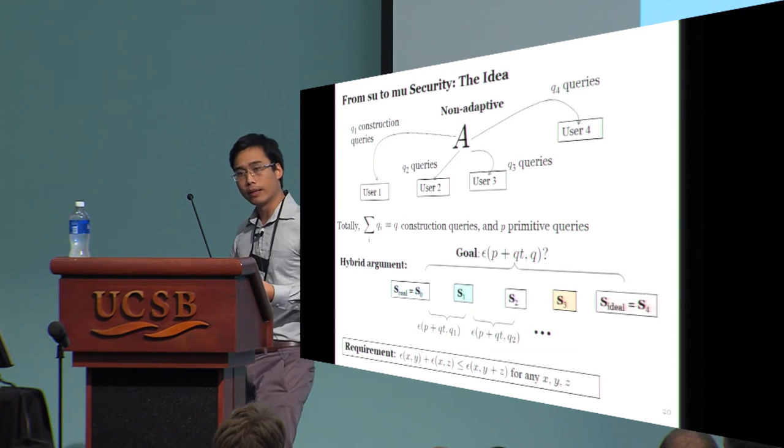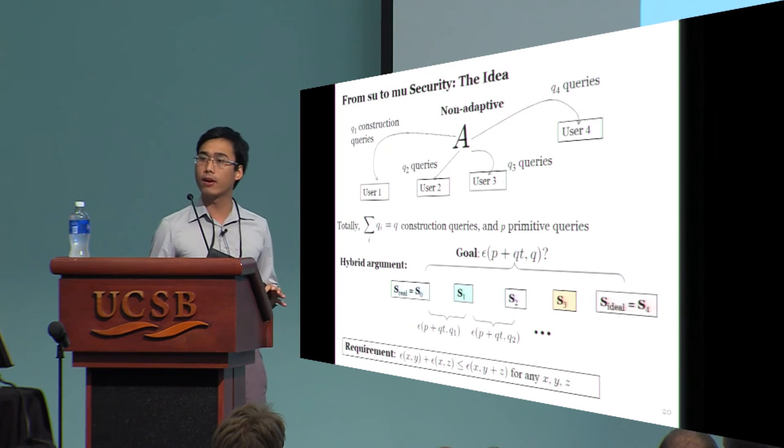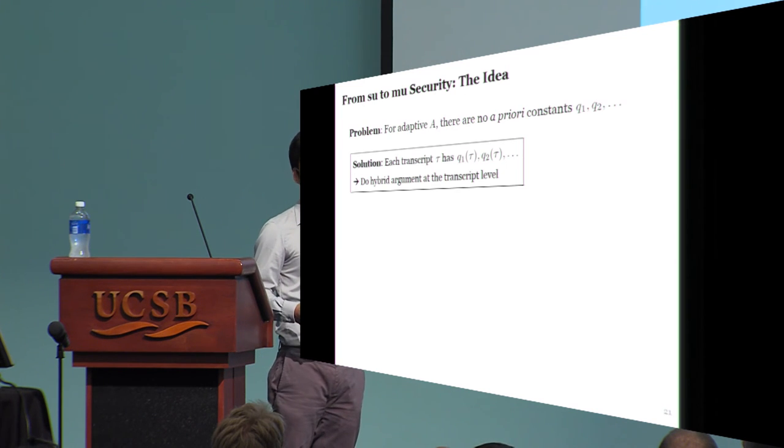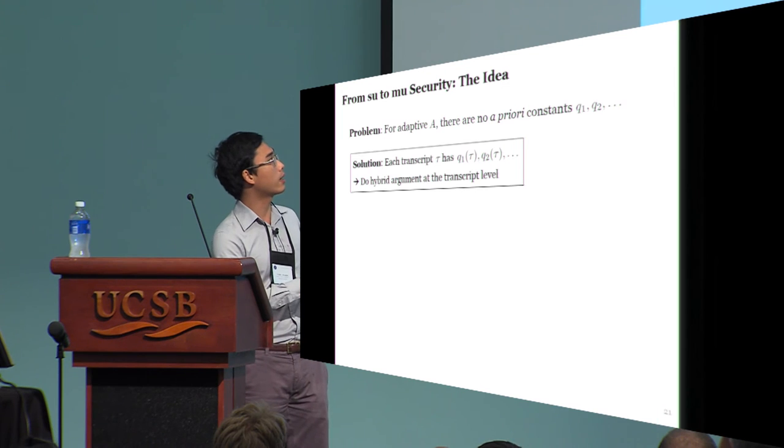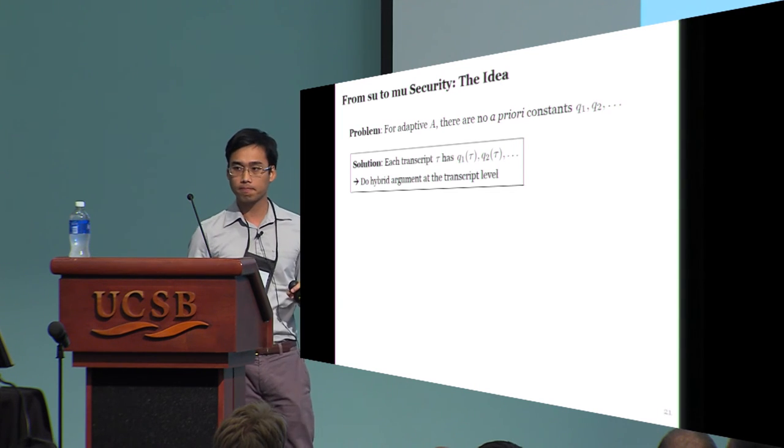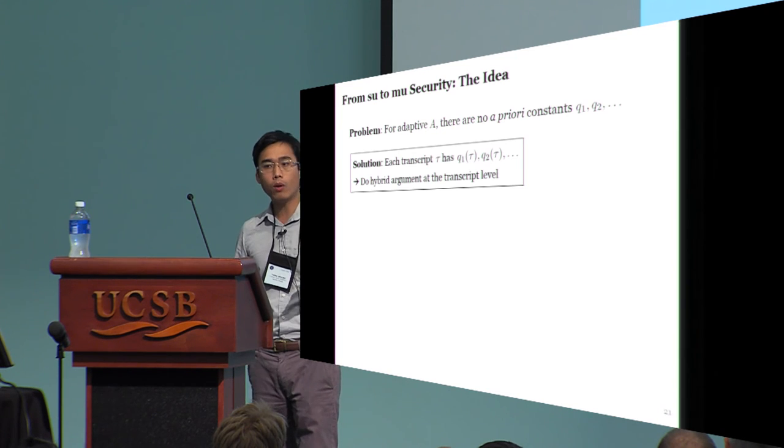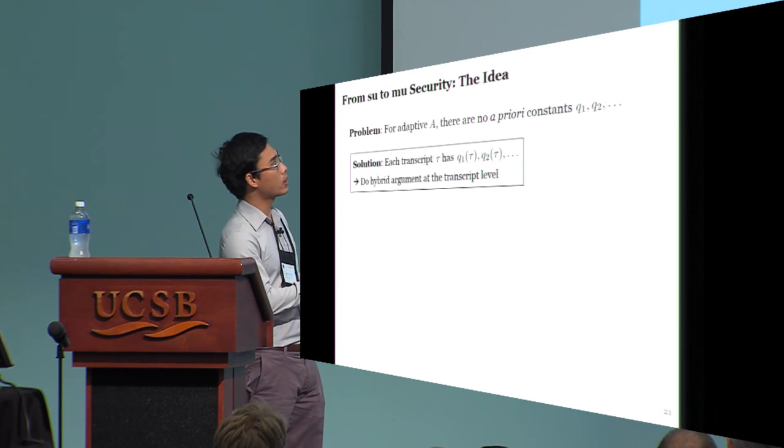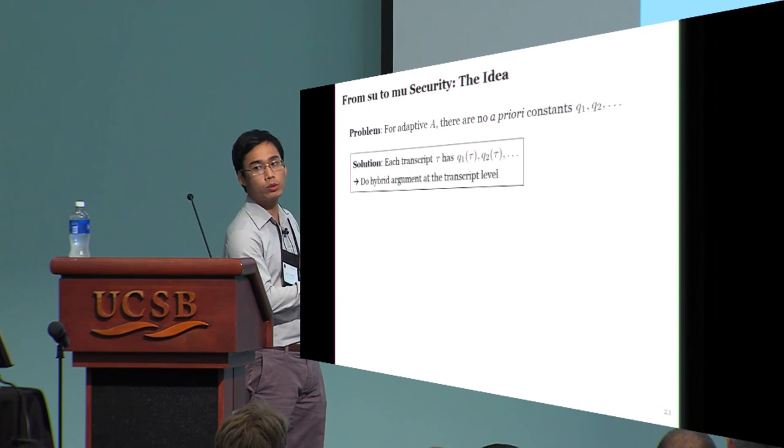Now the hybrid argument that you've just seen only works for a non-adaptive adversary. For an adaptive adversary, there won't be a prior constants, Q1, Q2, and so on. To resolve that, if we look at an individual transcript, it will provide us with some transcript-dependent numbers, Q1 tau, Q2 tau, and so on.